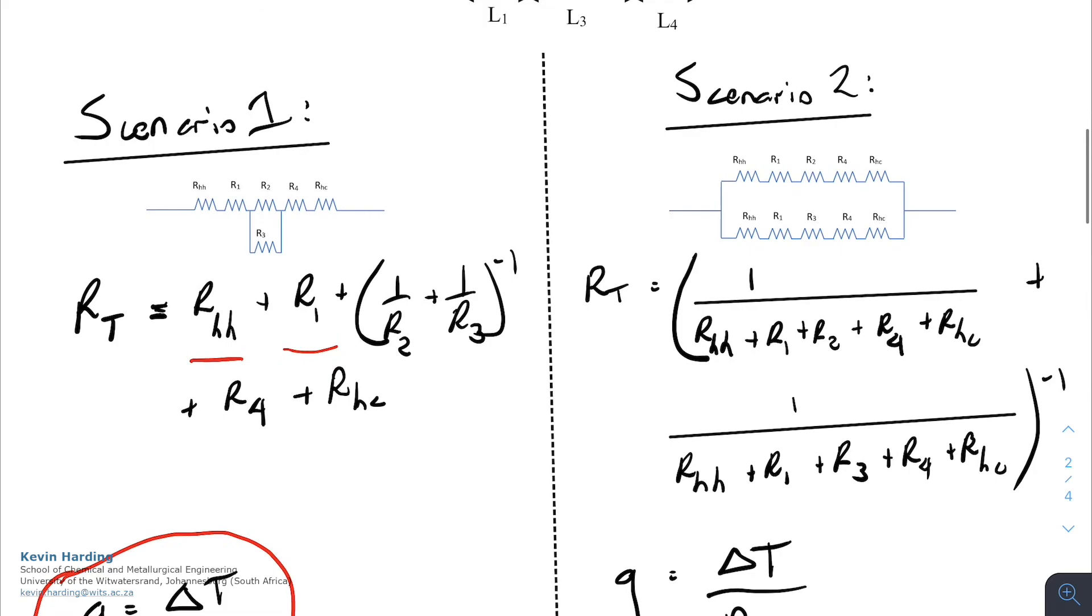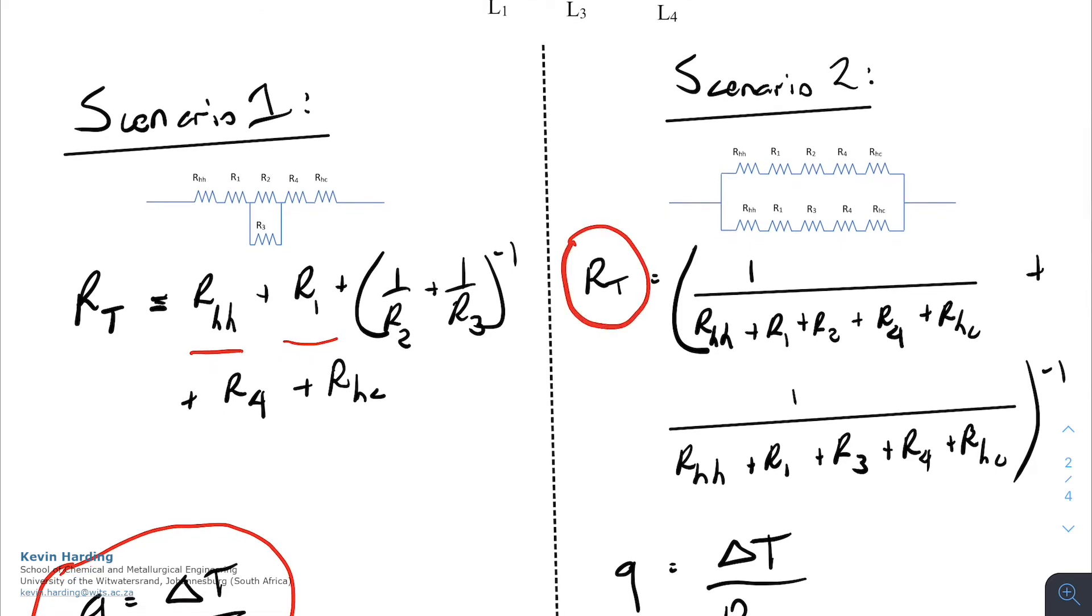On the right hand side for scenario two, we do the same thing where the total resistance is equal to one divided by, as we said, the entire series added together, plus one divided by the entire section on series to the power of minus one.